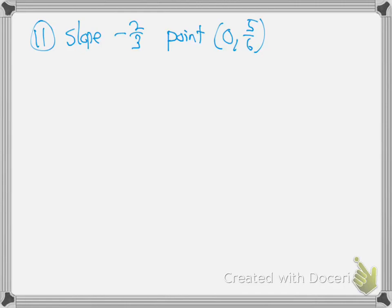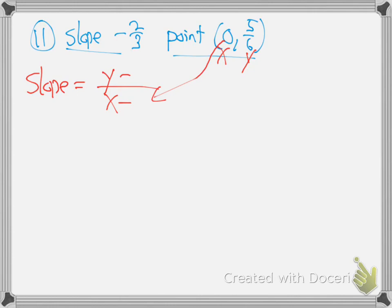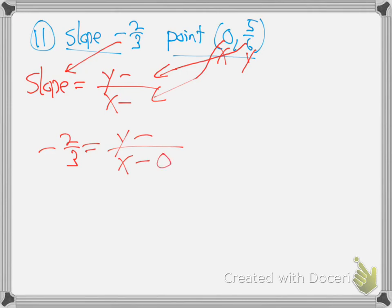Okay, so number 11. I skipped number 10 — do number 11, number 11 is harder. So they give us the slope and the point, and they want me to come up with the equation. What we always do is write slope equals y minus blank over x minus blank. This is the x and the y, so this goes behind the x, this goes behind the y. The slope is minus 2 thirds. So minus 2 thirds equals y minus 5/6 over x minus 0.